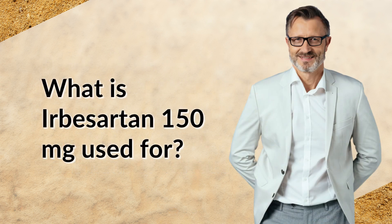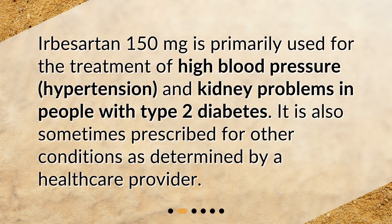What is Irbesartan 150 mg used for? Irbesartan 150 mg is primarily used for the treatment of high blood pressure, hypertension, and kidney problems in people with type 2 diabetes. It is also sometimes prescribed for other conditions as determined by a healthcare provider.